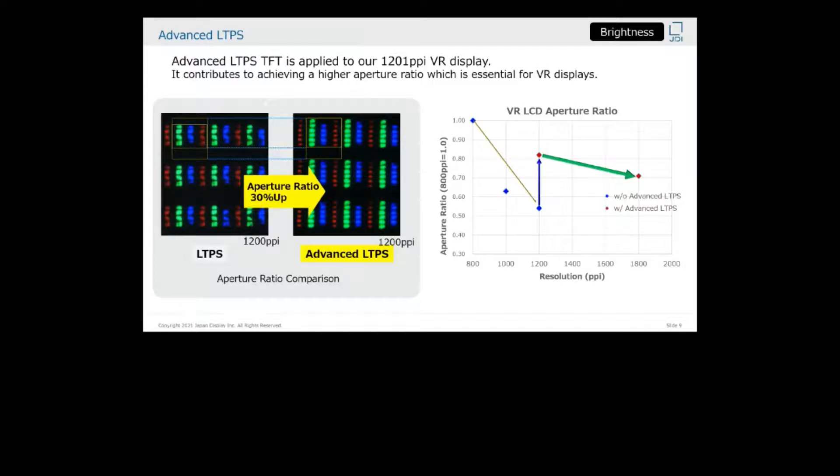LTPS is a core strength of JDI's know-how. This 1201 PPI LCD is our very first VR display using what we call advanced LTPS, which is an evolutionary step to our baseline LTPS.